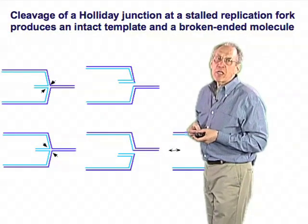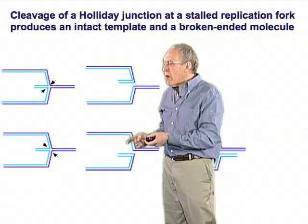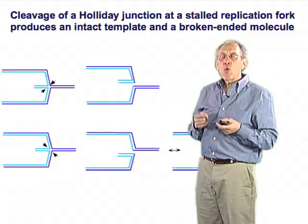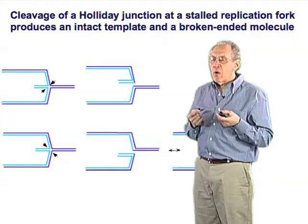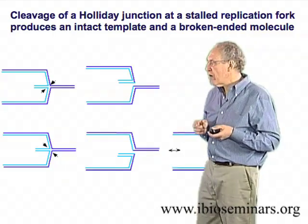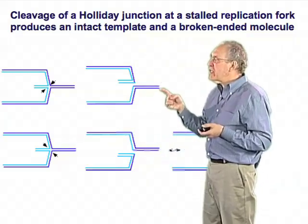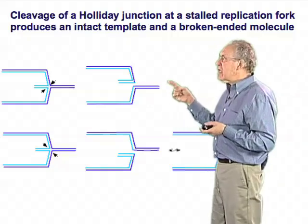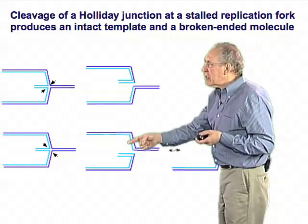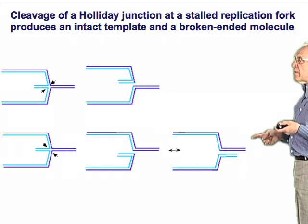Going back to the stalled replication fork, the regression of the replication fork leads to the formation of a Holliday junction. One of the ways this regressed replication fork breaks is because of the action of Holliday junction resolvases. It doesn't matter whether it cuts in one plane or the other, because in both cases there is one intact DNA molecule and one broken molecule.